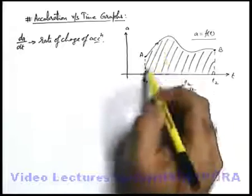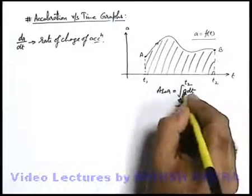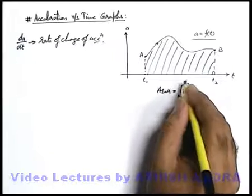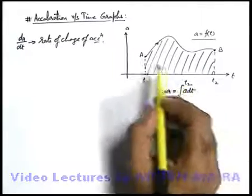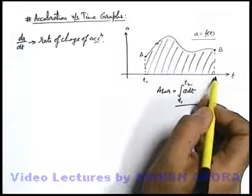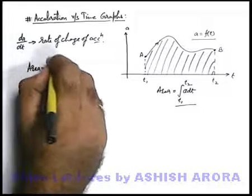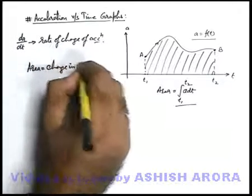However if we find out the area below the graph up to time axis, this is given by integration of a dt from t1 to t2. This area will give us the total change in velocity between the time instants t1 and t2. Here this area can be simply written as change in velocity.